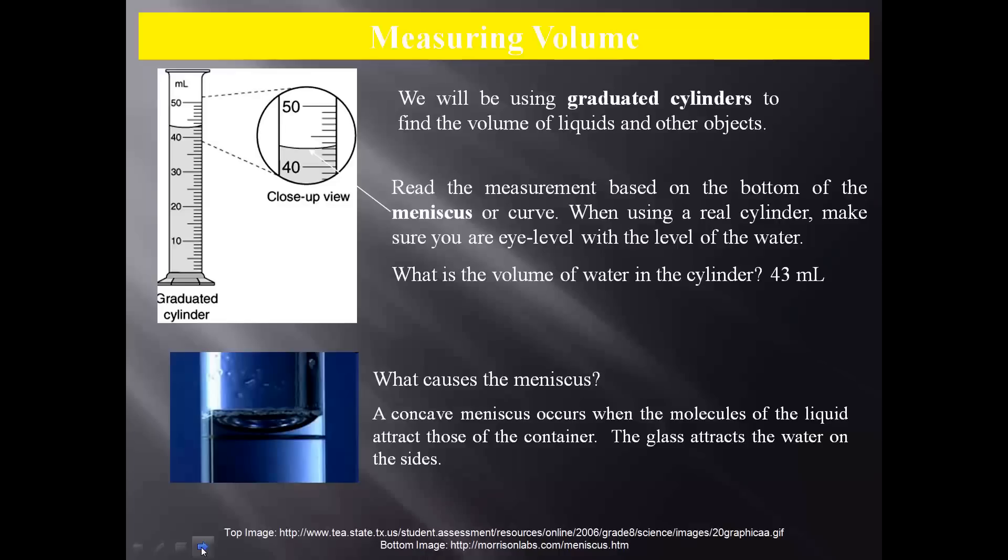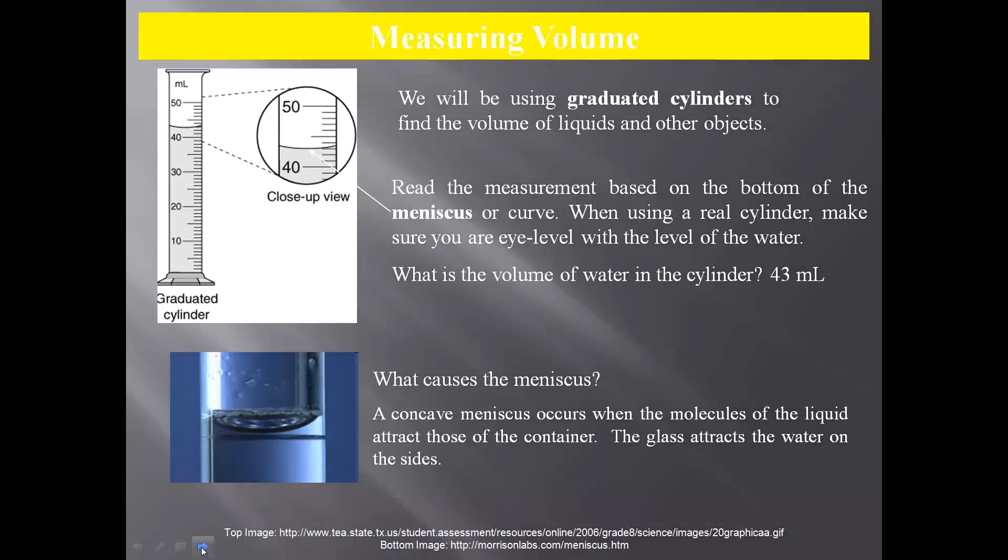In this example, what is the volume of water in the cylinder? It's actually 43 milliliters. You can see the top of the curve is almost at 44, but you read from the bottom. The meniscus is caused when the molecules of water, or the liquid, are attracted to the sides of the container. That's why you have this meniscus, or this curve, in a graduated cylinder. You'll see this in test tubes and other cylinder-type objects.